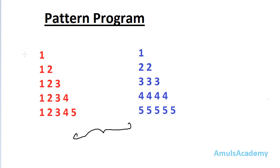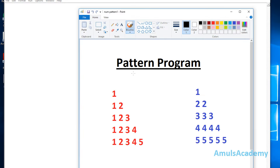So now we will learn how we can write a Python program to get output like this. Let's begin with the code. First we will ask the user to enter the number of rows. In our output we can see 5 rows, but in our program we will ask the user to enter the number of rows. We need to use the input function for that, and I will take one variable called n which will store the number of rows, and I will ask the user to enter the number of rows.